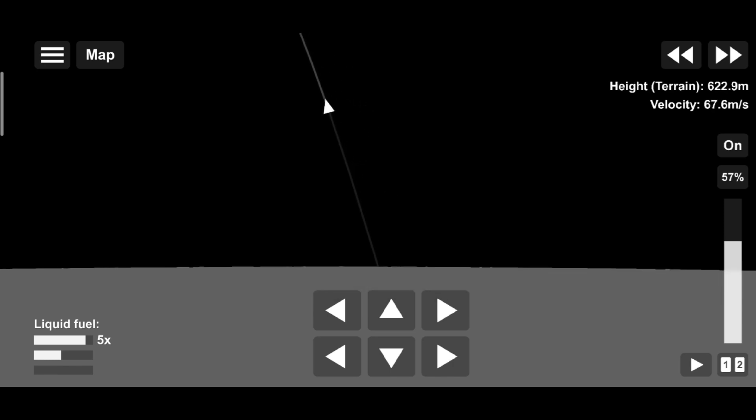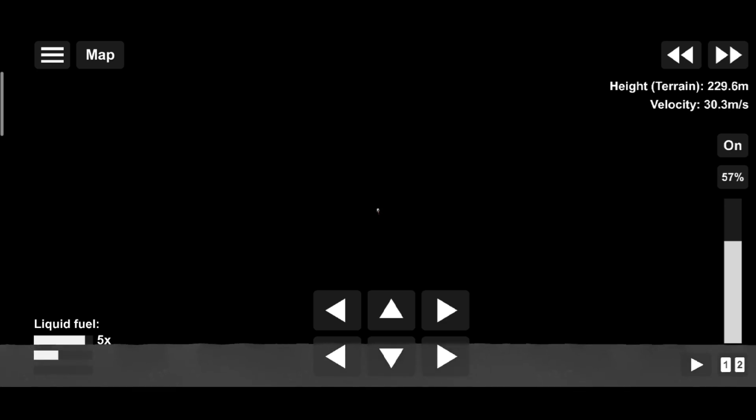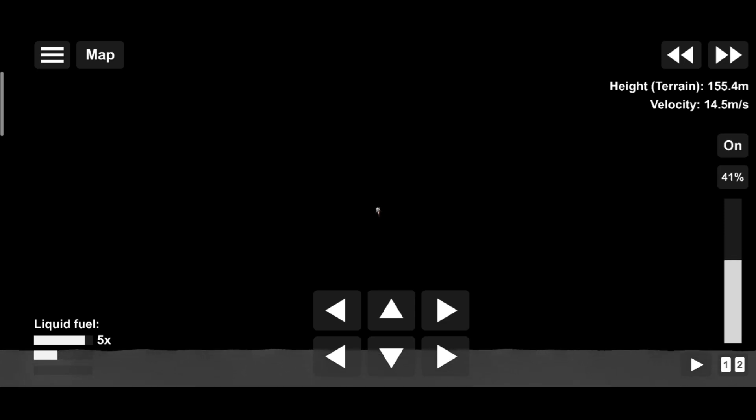Altitude 1,600. Eagle looking great. Roger. 1202, we copy it. 35 degrees, 750. Coming down to 23. 540 feet and at 15. And at 50 feet and at 4. Altitude, velocity.